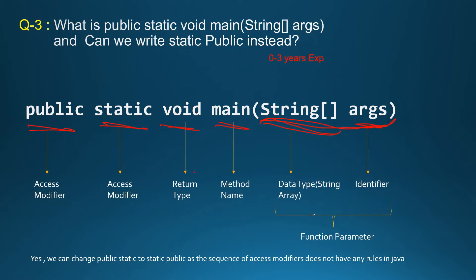Can we write static public instead? Yes, we can. We can change public static to static public because the sequence of access modifiers doesn't have any impact. So that is valid. Another question that may come: can I change the string array parameter to integer? No, we cannot. We always have to use a string array for command line arguments.